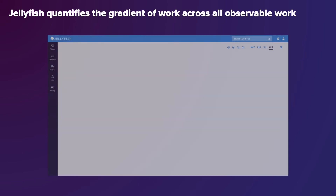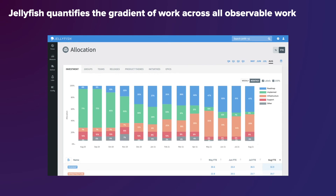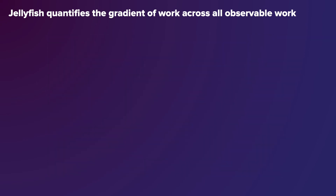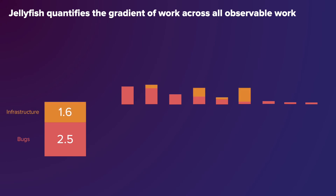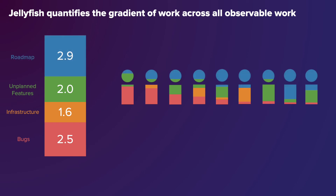What's relevant about Jellyfish is we can account for all observable work we can see. However we classify investment categories, we can use the power of measuring how much human time and attention went in across all of them — 2.5 FTEs for bugs, 1.6 FTEs for infrastructure, 2.0 FTEs for unplanned features, and 2.9 FTEs for roadmap.